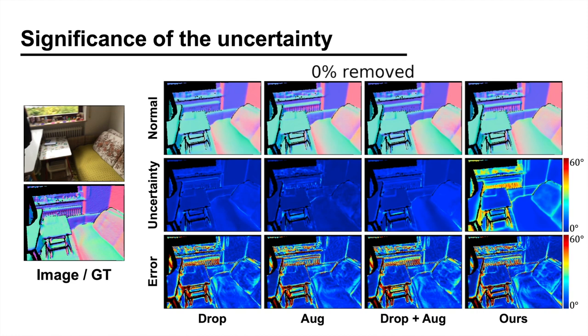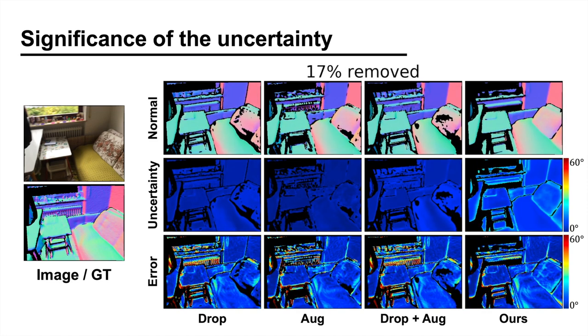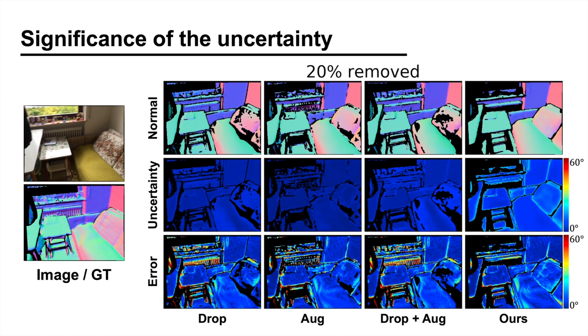Here is a qualitative example. Each column shows the predicted normal, the uncertainty, and the prediction error of each method. We can now try removing the pixels with the highest uncertainty. For our method, the pixels on small structures and those near object boundaries are removed. And since those are the ones with high error, the remaining pixels are much more accurate than those remained by the other methods.